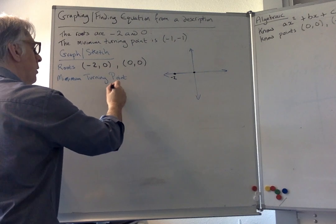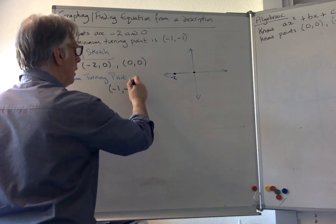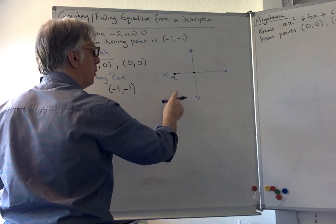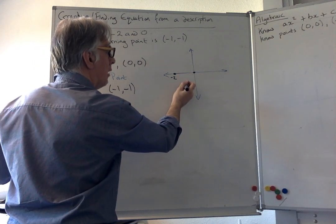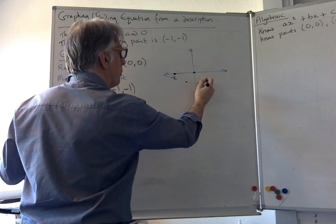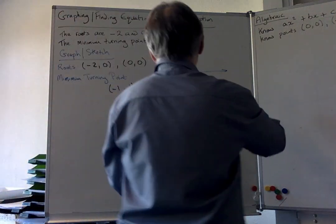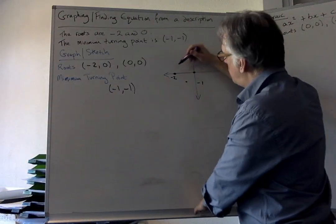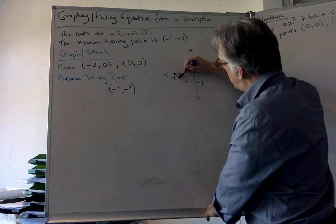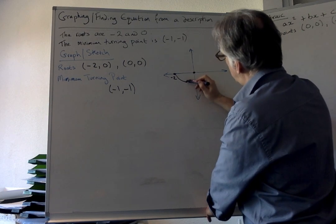The minimum turning point we're told is (-1, -1), which of course is halfway between the roots, as you know. So it's somewhere halfway; let's pretend that minus one is about there. And then we know it's a U shape, it's a minimum turning point, so then I try and curve it around.